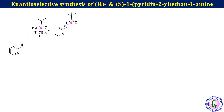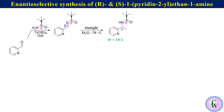When this intermediate is allowed to react with methyl magnesium bromide in ether at minus 78 degrees centigrade, it produces the R,R diastereomer as the major product with a diastereomeric ratio of 14:1. It is worth noting that the diastereoselectivity is high with other alkyl and aryl magnesium bromides.